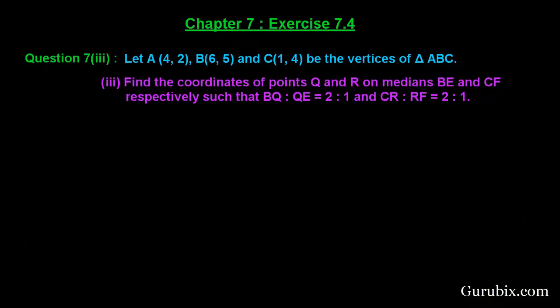Welcome friends. Let us solve the third part of question number 7 of exercise 7.4 of chapter 7. The question says: let A(4,2), B(6,5), and C(1,4) be the vertices of triangle ABC. Find the coordinates of the point Q and R on medians BE and CF respectively, such that BQ to QE is equal to 2 to 1 and CR to RF is equal to 2 to 1.